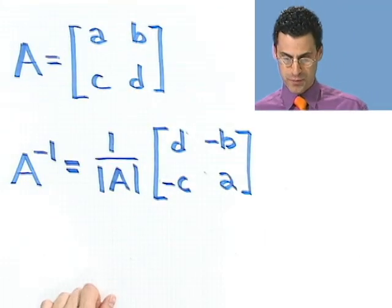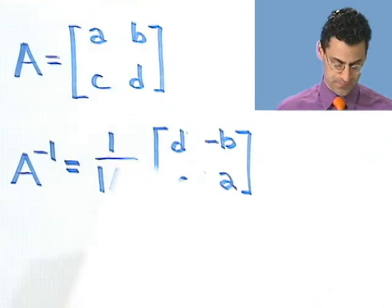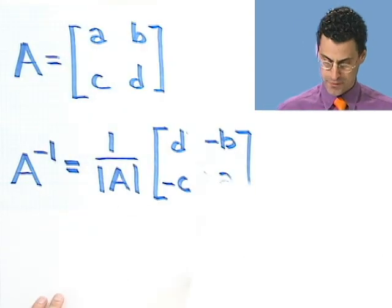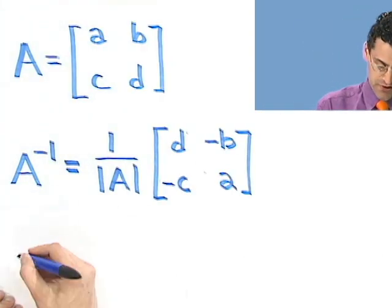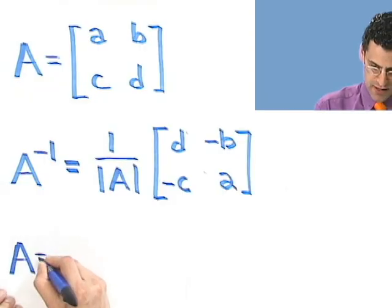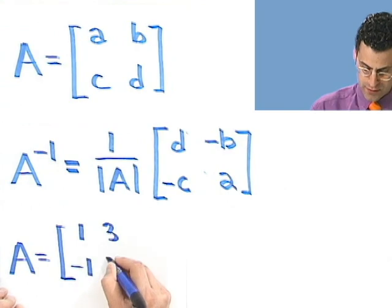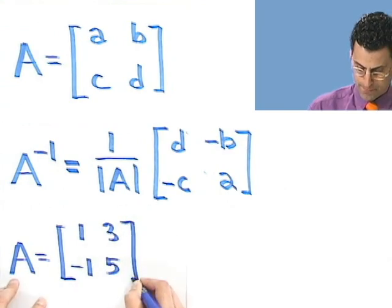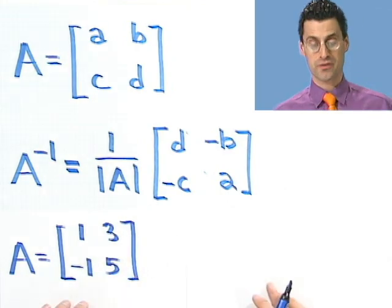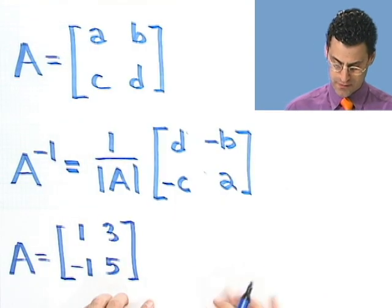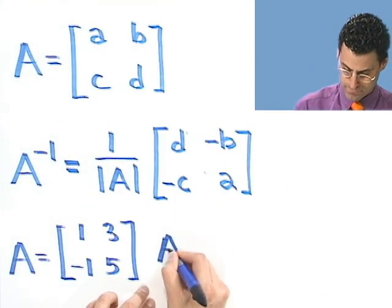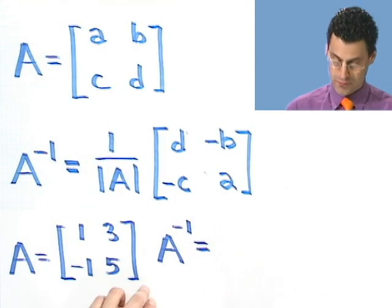Let's try it with a particular example. So suppose I take a look at the following. Suppose that A were to be the matrix 1, 3, minus 1, 5. And the question is, what's the inverse? Well, the inverse would be, what do I do?